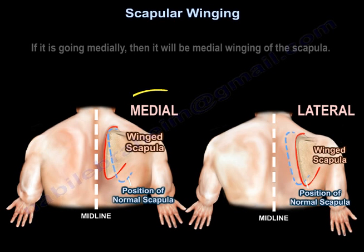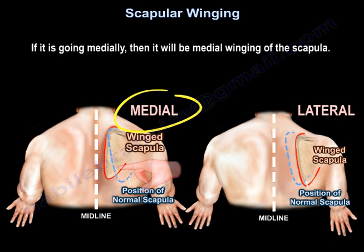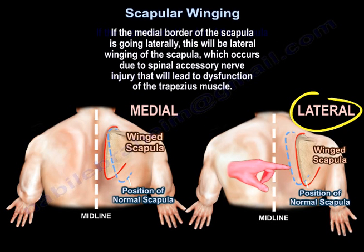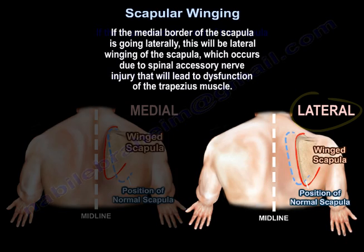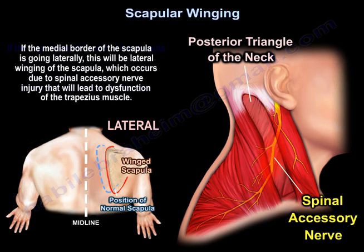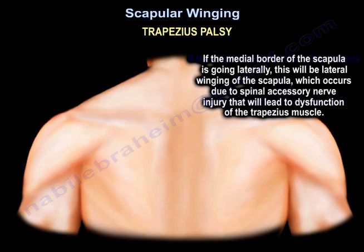If the medial border is going medially, it will be medial winging of the scapula. If it is going laterally, it will be lateral winging of the scapula, which occurs due to spinal accessory nerve injury, leading to dysfunction of the trapezius muscle.